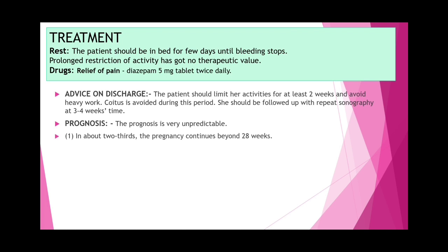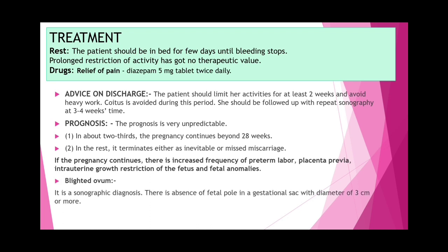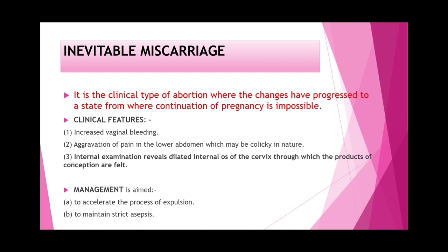Prognosis is unpredictable; about two-thirds of pregnancies continue beyond 28 weeks, and the rest terminate as inevitable or missed miscarriage. If pregnancy continues, there is increased frequency of preterm labor, placenta previa, intrauterine growth restriction, and fetal anomaly. Blighted ovum is a sonographic diagnosis: absence of fetal pole in a gestational sac with diameter of 3 cm or more — also known as anembryonic miscarriage.